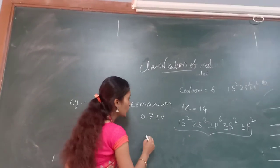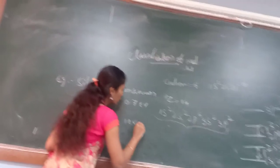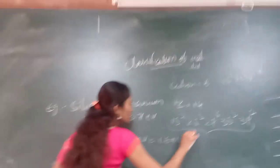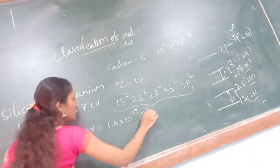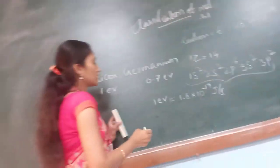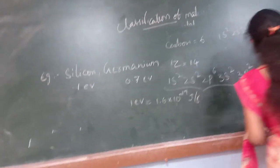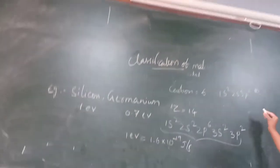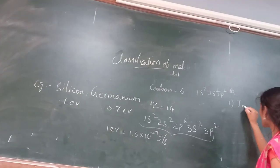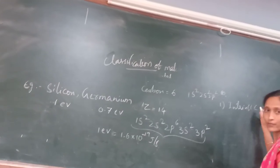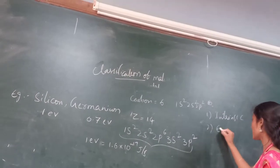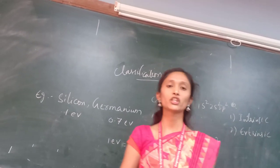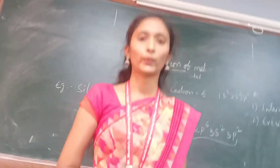Semiconductors are classified into two types: the first is intrinsic semiconductor, and the second is extrinsic semiconductor. We will see about intrinsic semiconductors in the next video. Thank you.